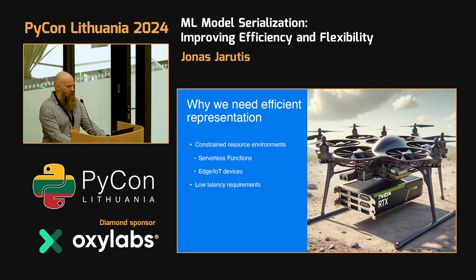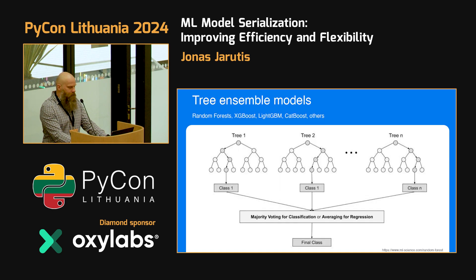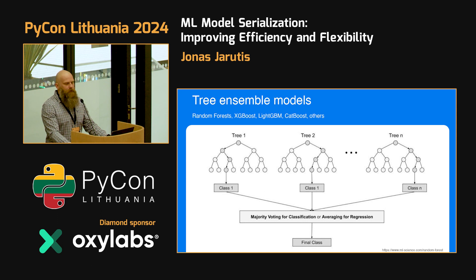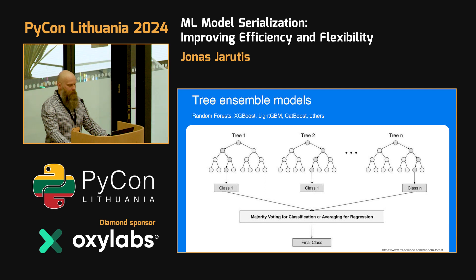And also, if we need to squeeze every bit of performance possible, we need to check how models are represented in code as well. Tree-based models are pretty popular, probably the most popular for tabular datasets. They consist of several trees where every node takes some input variable and splits it based on whether the input value is larger or lower than a threshold. We get a number of those trees, run inference through them, and in the final stage the results are aggregated. The structure is mostly the same with most tree-ensemble models — the difference is how those trees are created and how the final result is aggregated.